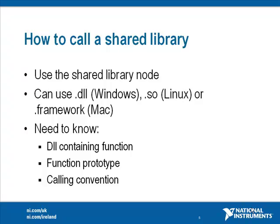To call a shared library we use the shared library node, which I'll be showing you shortly. The same code works for calling DLLs, shared objects, or frameworks. But there are a few bits of information we need before we use these. Firstly, we need to know which DLL contains the function. We also need to know the function prototype — that is the name of the function and the arguments required to run it. Finally, we need to know the calling convention, of which there are two possibilities: the standard calling convention, which the Windows API uses, or the C calling convention. All of this information should be available from the vendor of your DLL, or if you've written it yourself, you can find it in the source code.